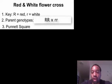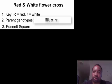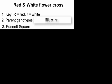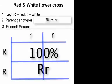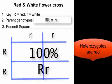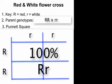Here's our cross. We set up our key as normal — big R is red and little r is white. Our parent genotypes are homozygous dominant and homozygous recessive. If we fill in our Punnett square, we'll see that 100% will be heterozygous. We assume that our heterozygotes are going to be red because red is dominant over white, so we expect to see 100% heterozygotes which are going to be red.